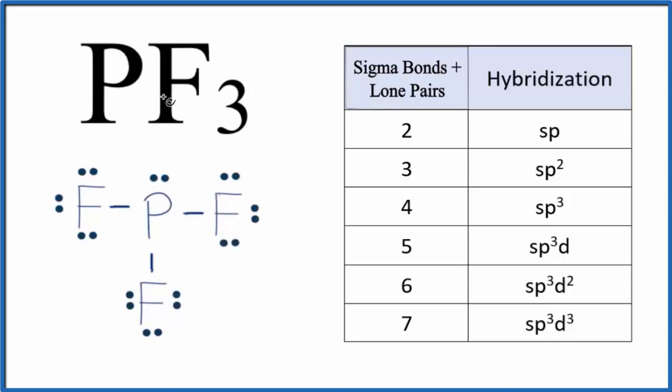In short, for PF3, the hybridization is SP3. And here's how we get this. Two simple ways.